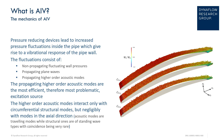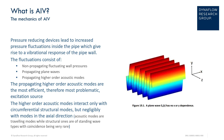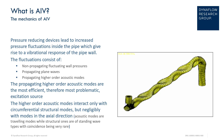The vibrational makeup of AIV consists of non-propagating fluctuating wall pressures induced by turbulence, causing an unsteady loading on the wall surface which in turn radiates noise; propagating plane waves that travel through the system; and propagating higher-order acoustic modes that excite the circumferential modes of the piping, also known as the flexural or breathing modes of the pipe. These latter fluctuations are the most efficient excitation source and therefore the most problematic.